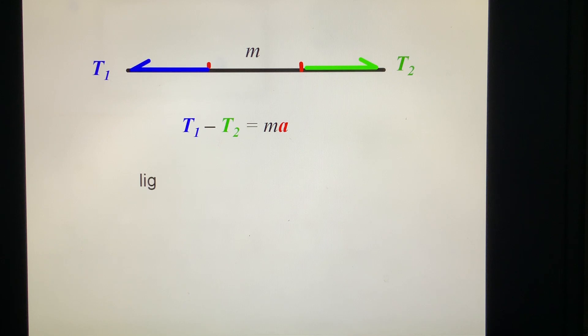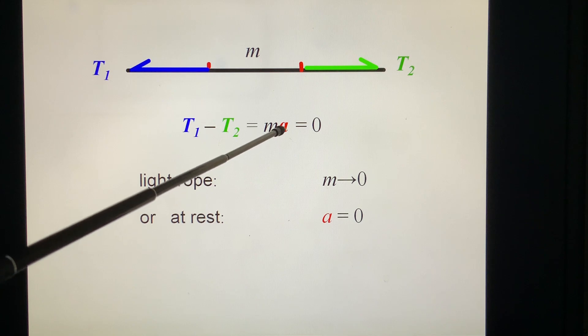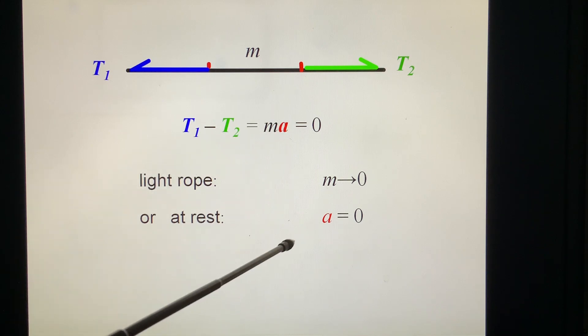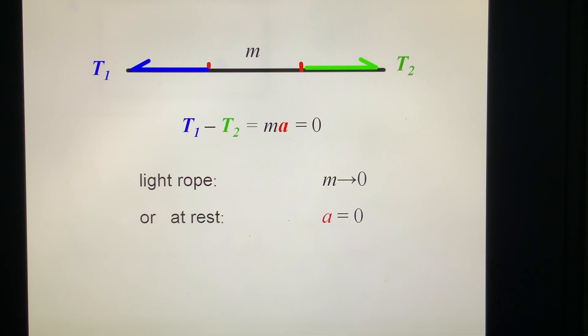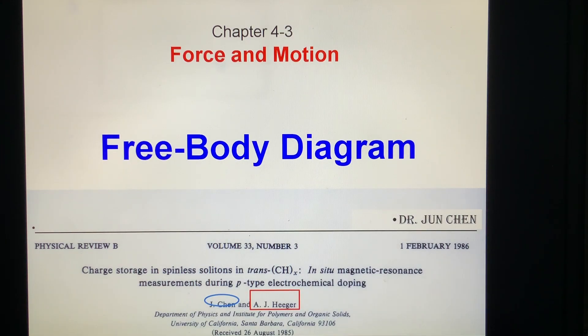Or if at rest A is zero, so this is zero. So that one, the tension in the rope is uniformly equal to one thing. Here, here, here, here.